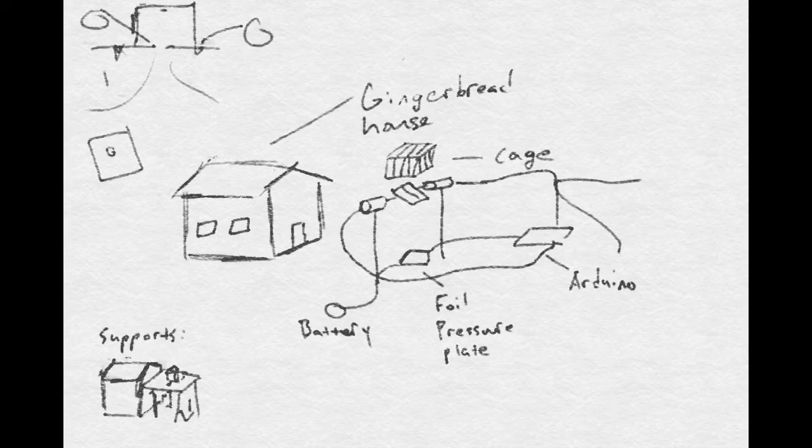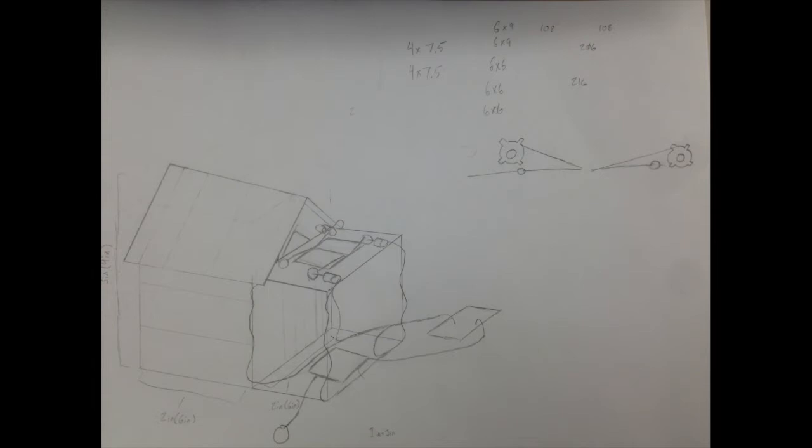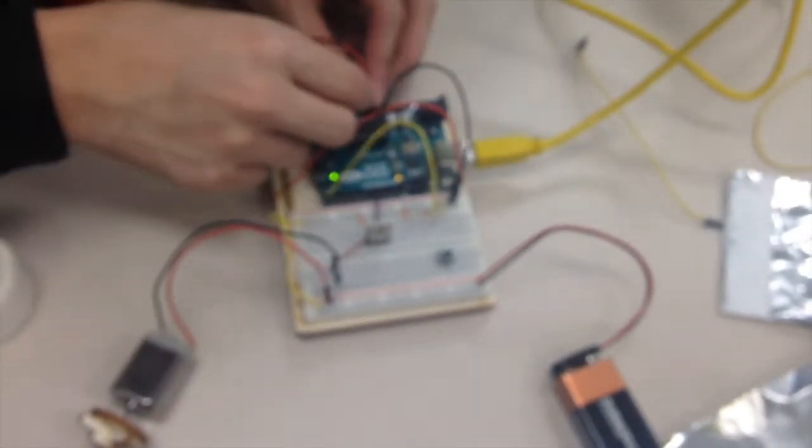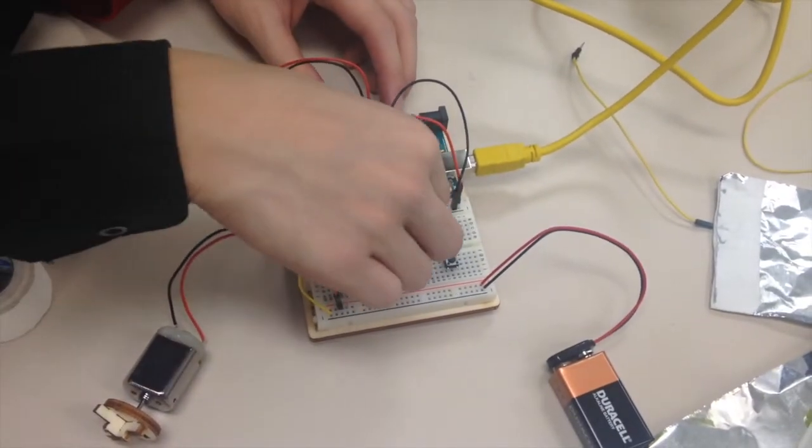What we ultimately decided on was that the gingerbread man would step on a pressure plate made of foil which would cause an Arduino to start a motor that would drop a cage onto him. An Arduino is a circuit board. You can program it to do certain things based on how it receives input and what to output.